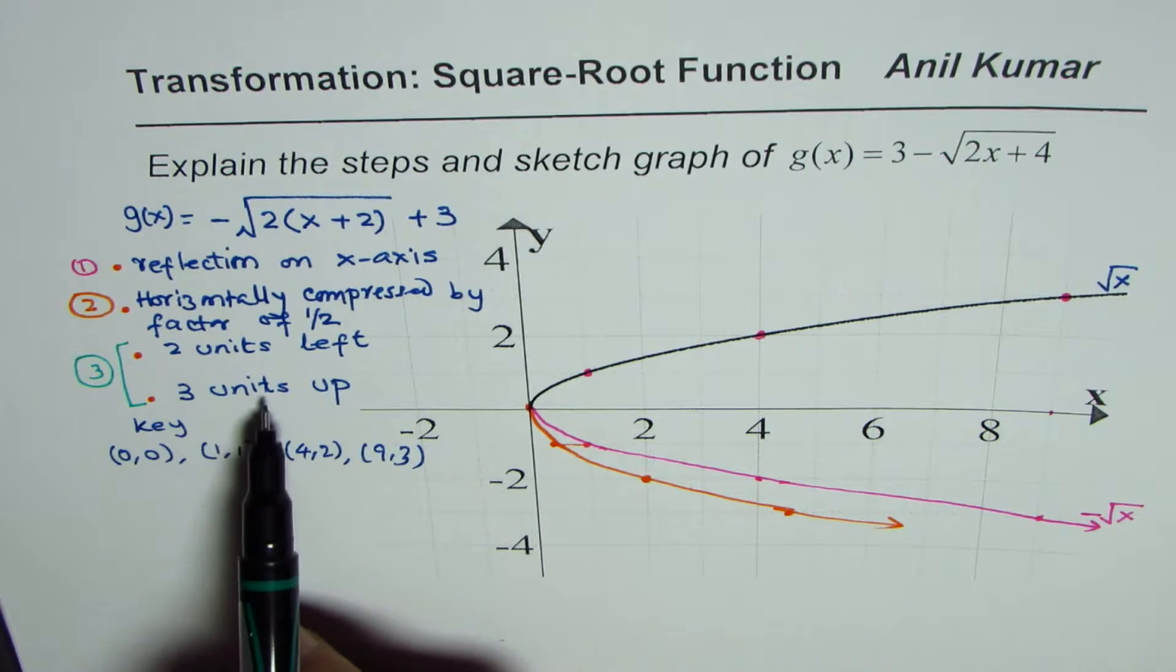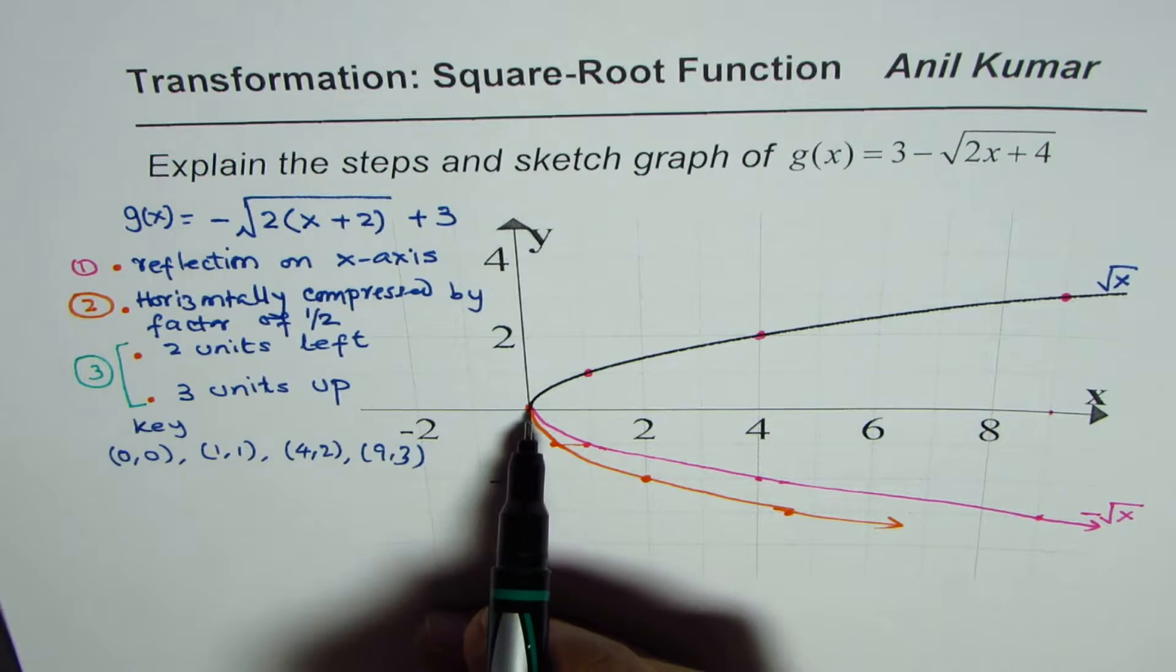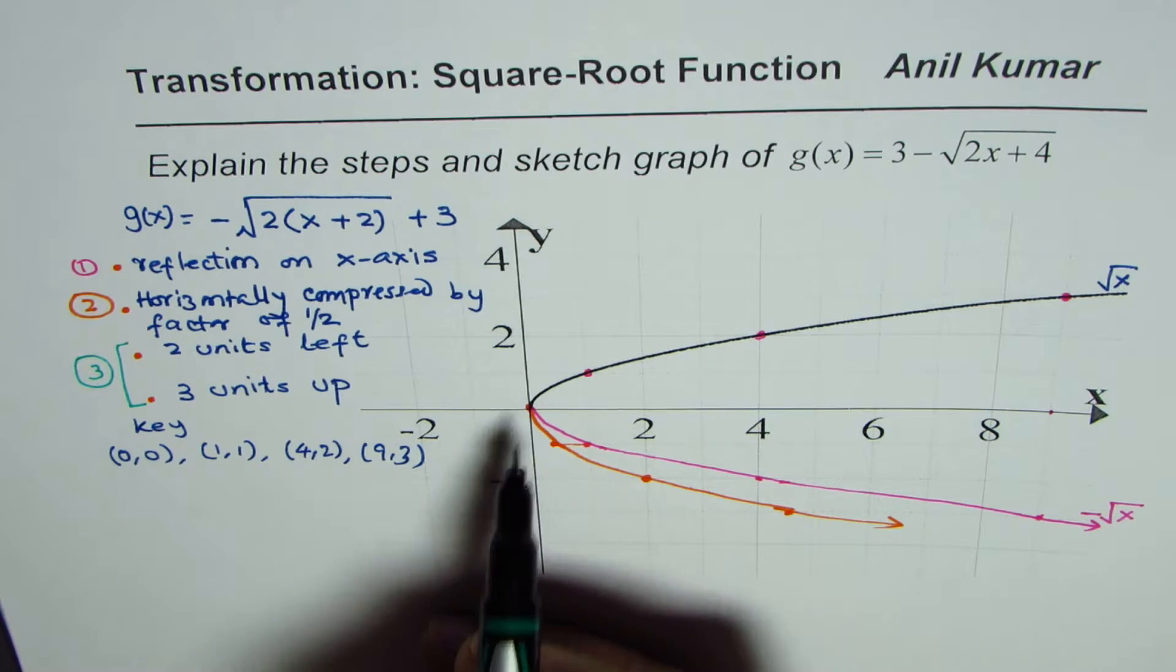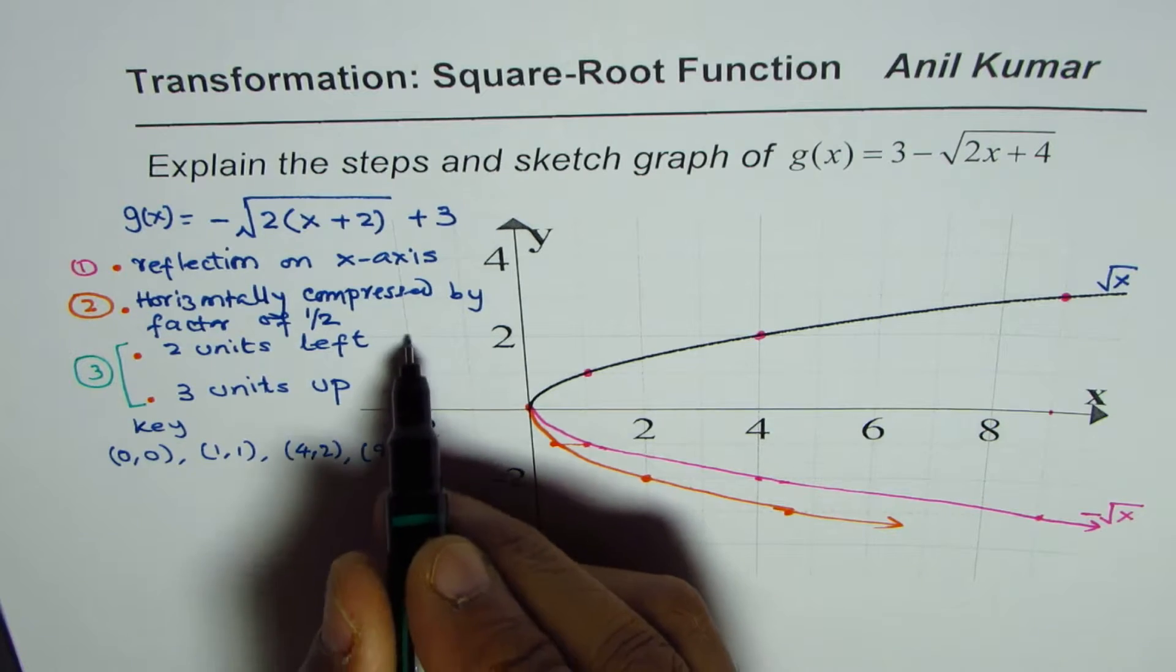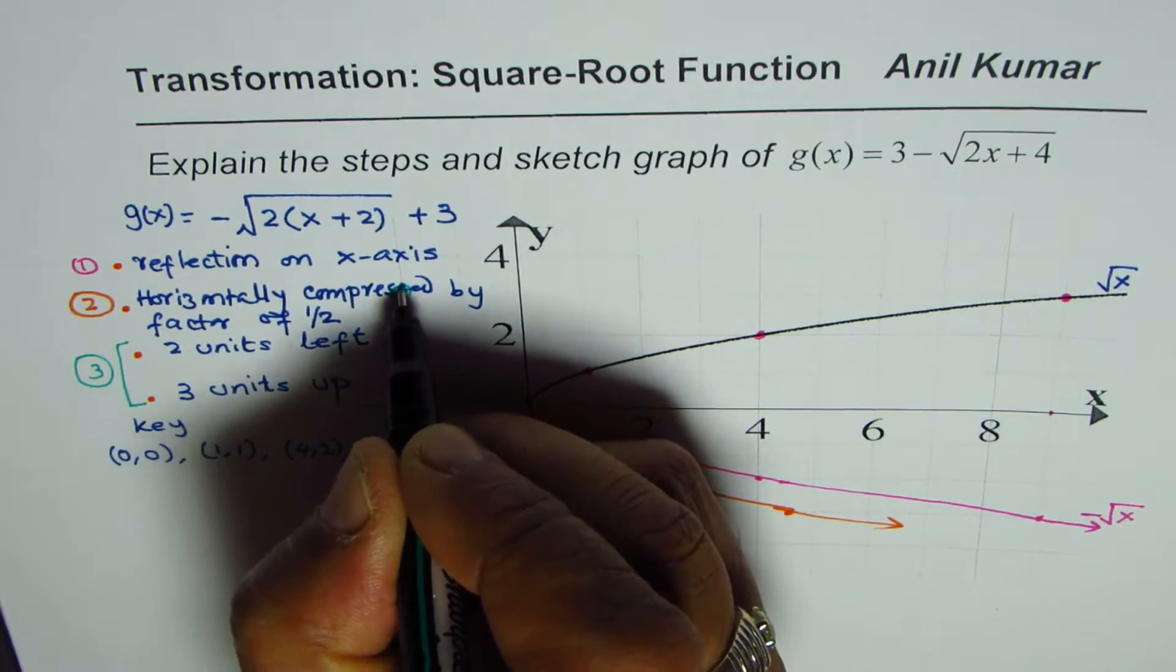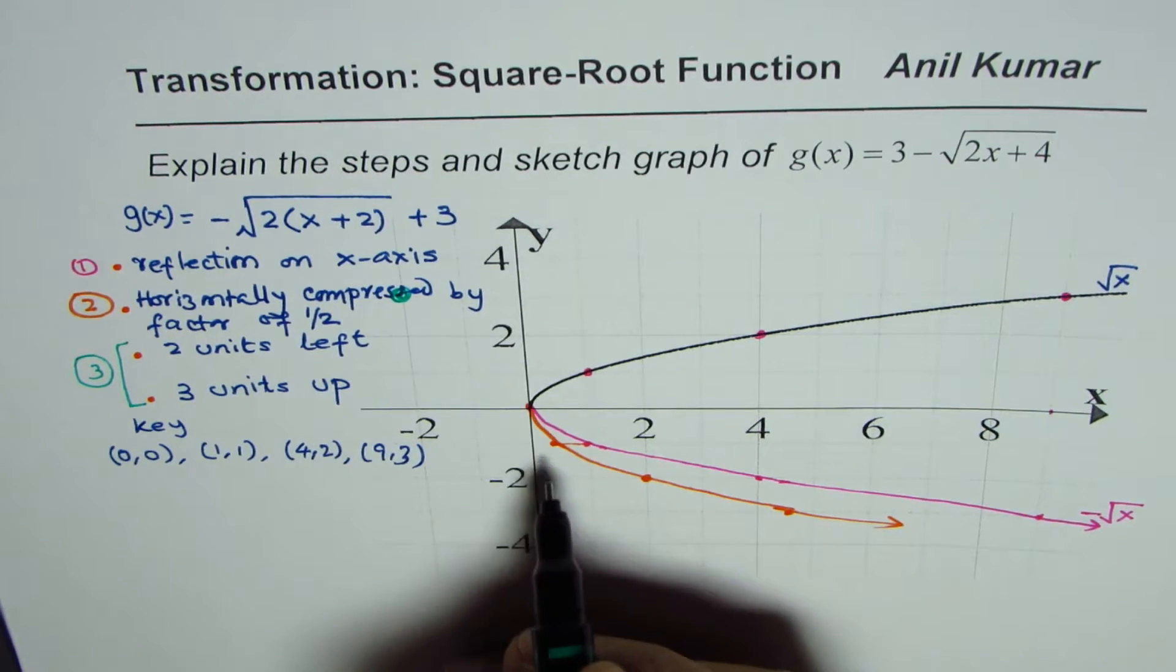So this is the first point, the origin itself: two units left and three units up—one, two, three—so there it goes. It comes at this place.